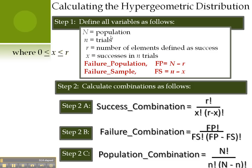Capital N is the population. Lowercase n are the trials. R, the number of elements within the population that are defined as successes. And lowercase x are the successes within our trials. I've added two variables here, failure population and failure sample, to simplify our later calculations.